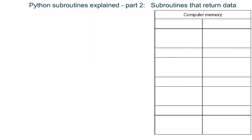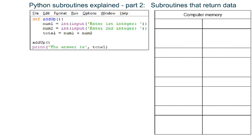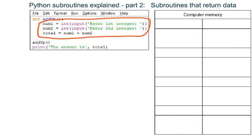That program worked correctly, but watch what happens in this next program. Once again, two numbers have been added together and the answer stored in a variable named Total, but this time we try to print out the answer stored in variable Total after the subroutine has finished.